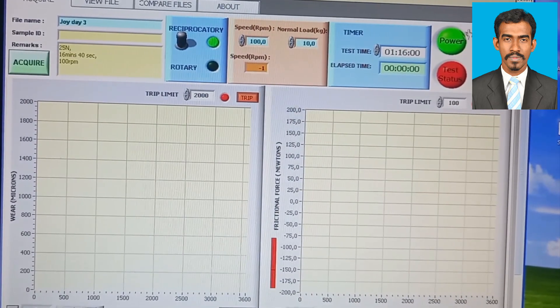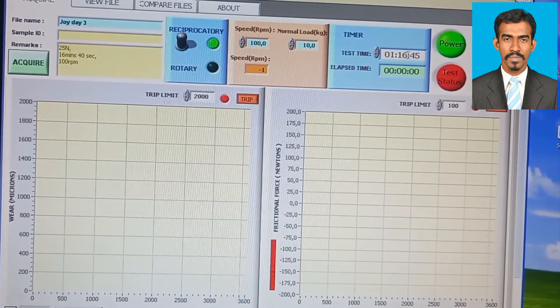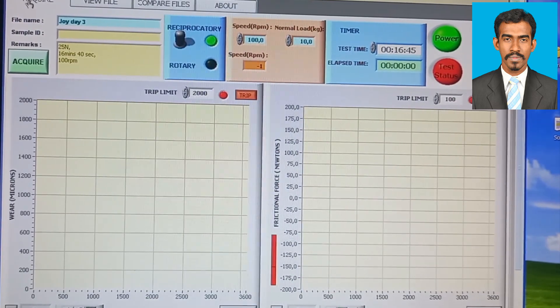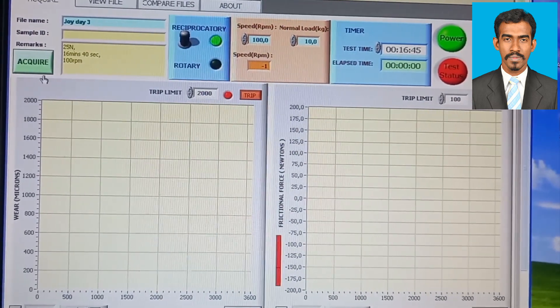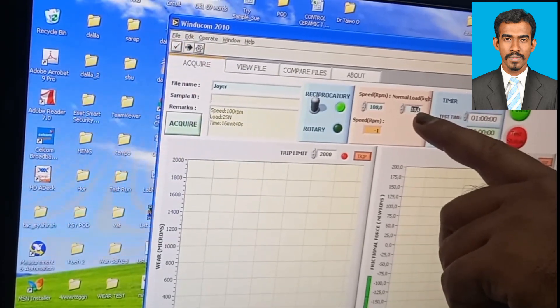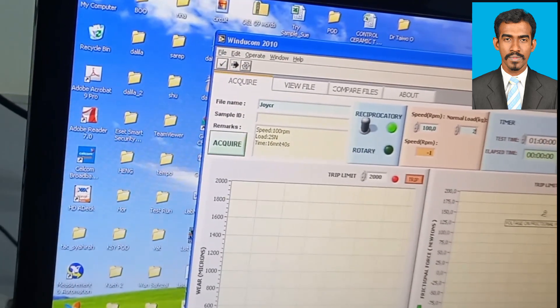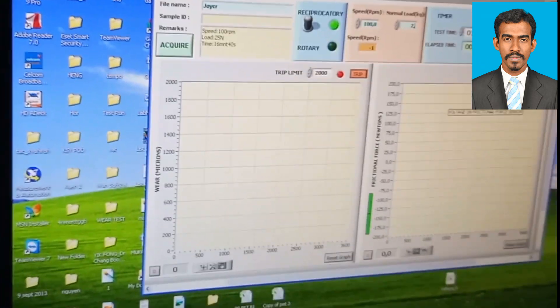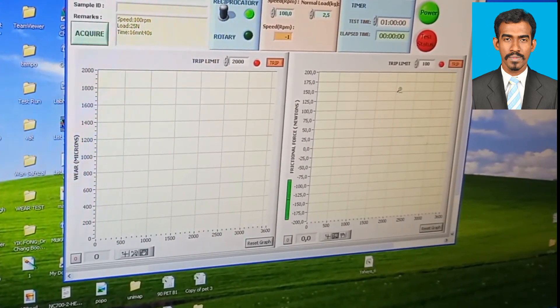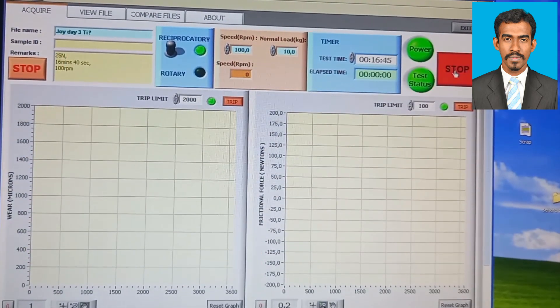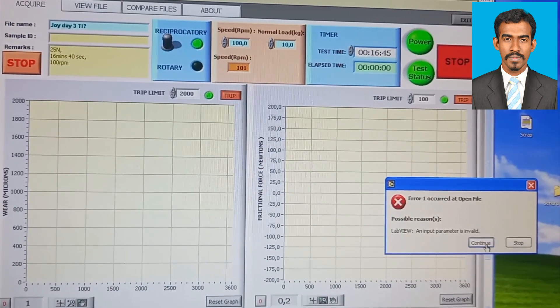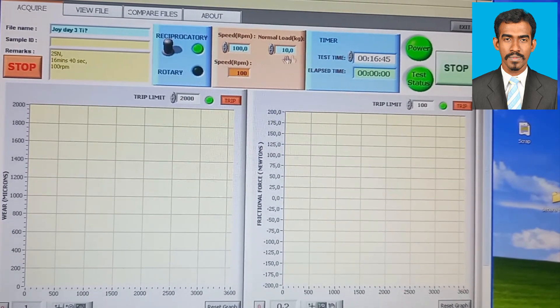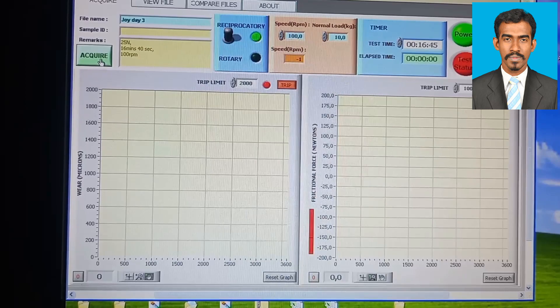Here we are going to set our time. For my run of 1000 seconds, I'll set 16 minutes and 40 seconds. Here is the setup for the force. The force which we enter should be equal to the force we applied through the loads on the machine. If they are not equal - for example, if we put a load of 2.5 kilograms on the machine and then put 10 kilograms in the software - that will show an error message like this. Once we enter all the parameters, we will set the force to zero.